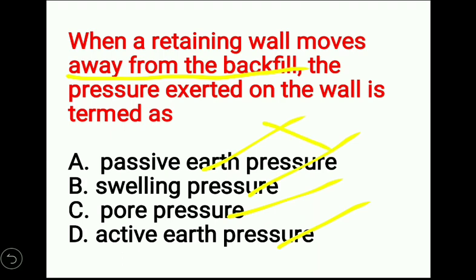Option A - passive earth pressure. Please remember: passive means towards. That means when a retaining wall moves towards the backfill, the pressure exerted on the wall is termed as passive earth pressure. Option B - swelling pressure. Swelling pressure is the pressure exerted by expansive soil which does not allow swelling or volume changes.